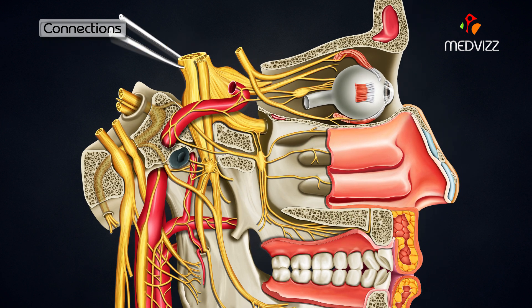The sensory roots come from the maxillary nerve. Its fibers pass through the ganglion without relay, and they emerge in the branches as described below.